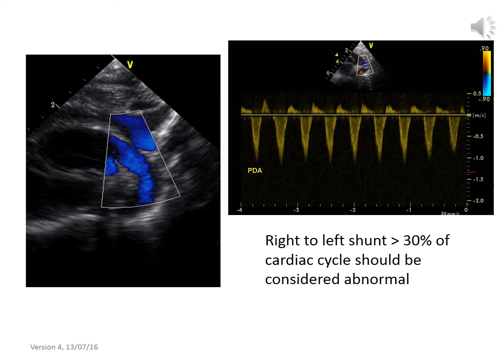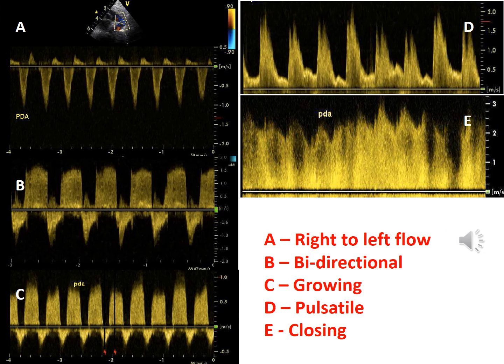On flow assessment, if you find a blue color duct and the entire flow going below the baseline, this represents right-to-left shunting in the PDA. Right-to-left shunt of more than 30 percent of cycle time should be considered abnormal, and could indicate underlying duct-dependent congenital heart disease or pulmonary hypertension. Clinical management should be guided by the condition of the baby and local practices.